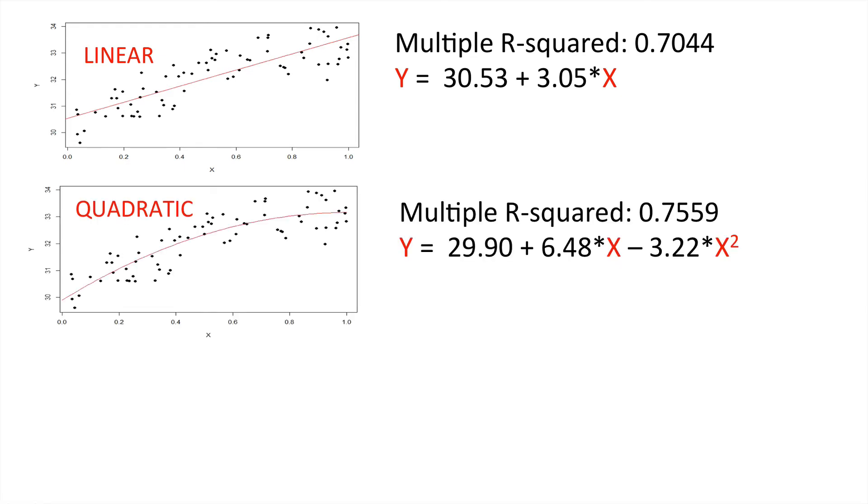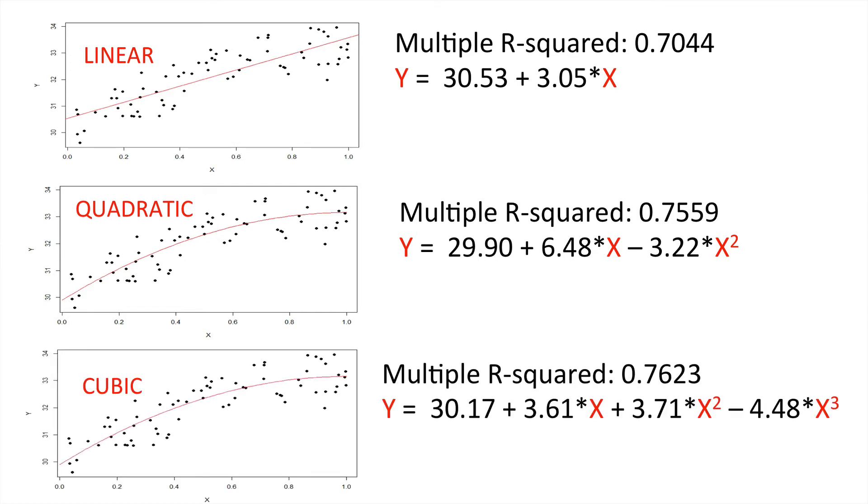However, when we fit the quadratic model, you will notice that we increase our R squared value. That is the proportion of the variability in terms of sums of squares that can be explained by the fitted model. And here, we change slightly our intercept and we have different parameters for the x and x squared coefficients. And here is the relationship between y and x expressed in terms of the quadratic fitted model.